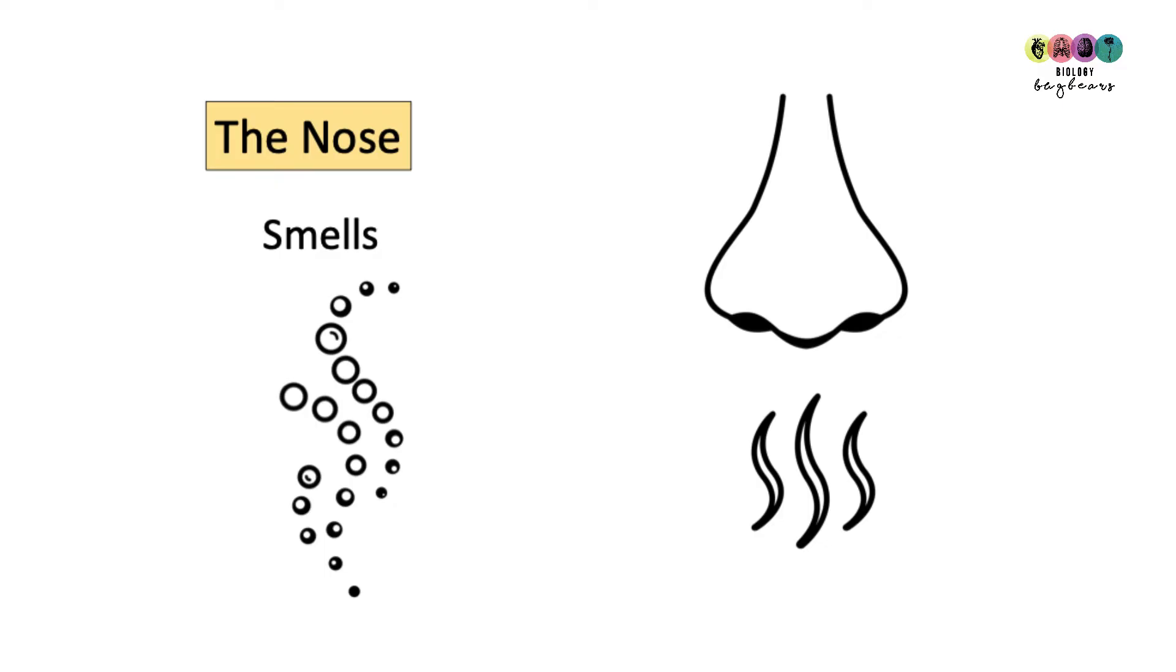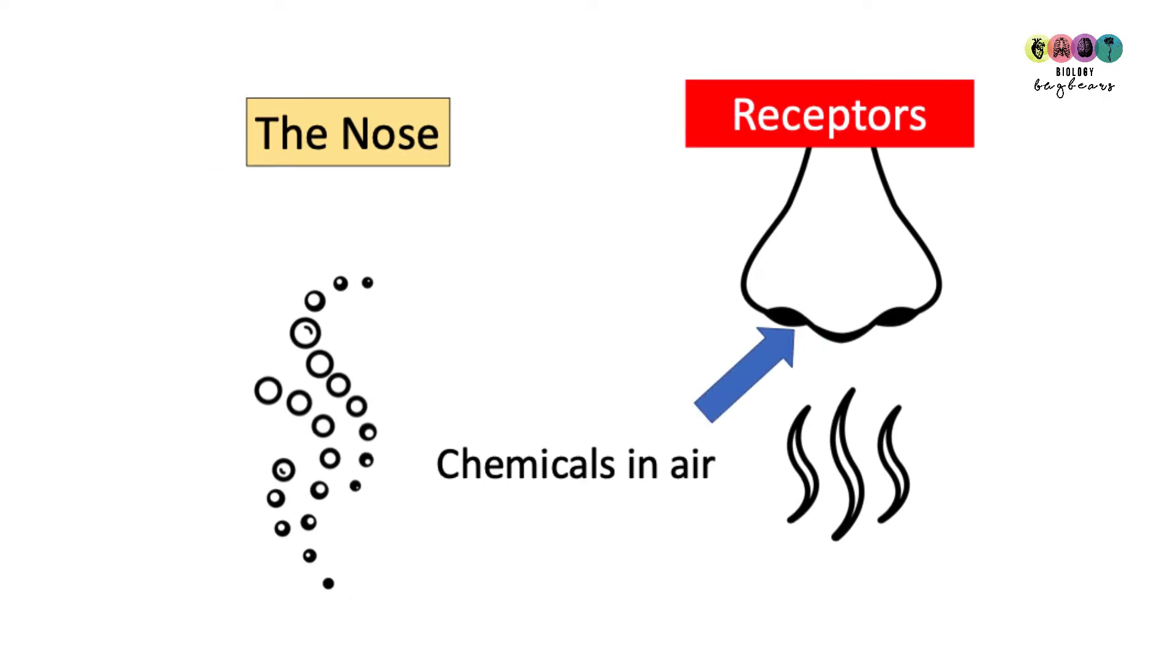Then we have your nose which is the sense organ which detects smells. This again is based on particular types of receptors that detect the chemicals that are found in the air and there are different receptors for different types of chemicals and that's why you get the different smells.